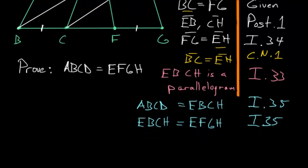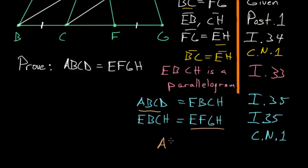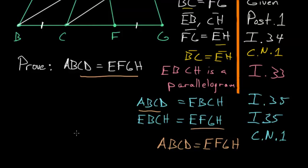Due to Common Notion 1, two things which are equal to the same thing are equal to each other. So since both ABCD and EFGH equal EBCH, they must be equal to each other. Therefore, parallelogram ABCD is equal to parallelogram EFGH, which is exactly what we were trying to prove. Q.E.D.